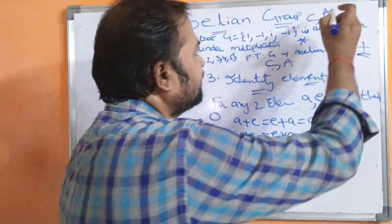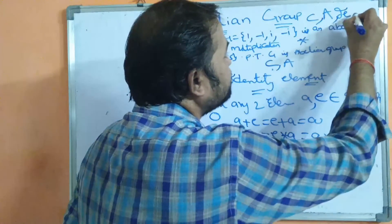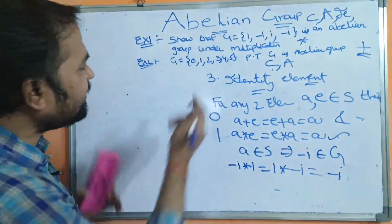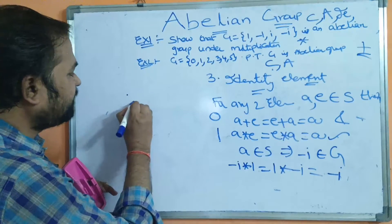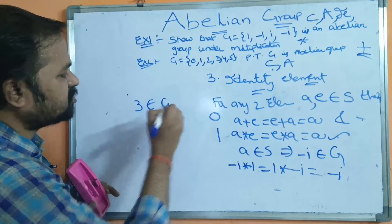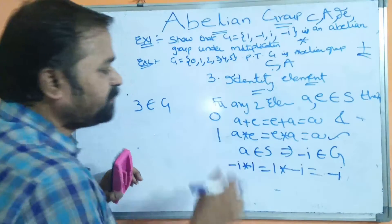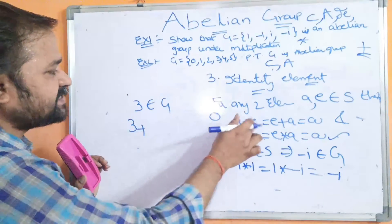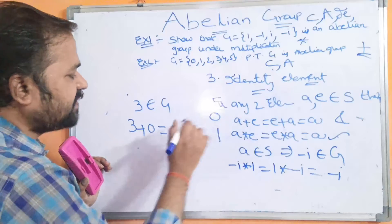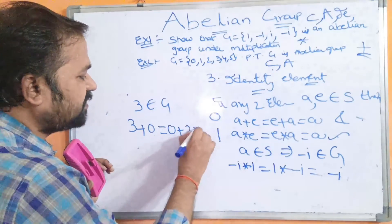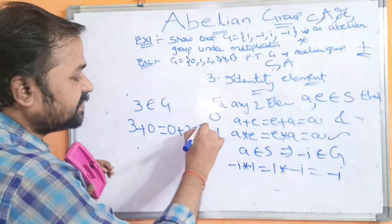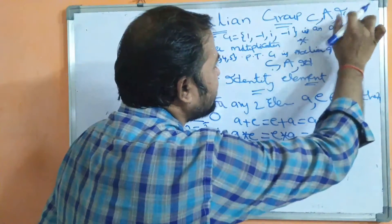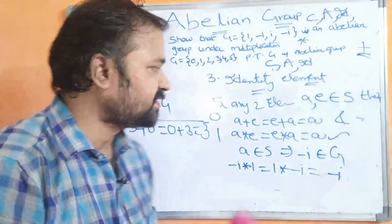For Example 2, let A = 3, so 3 belongs to G. We are doing the operation with respect to plus, and the identity element with respect to plus is 0. So: 3 + 0 = 0 + 3 = 3. The identity element is satisfied for the second problem also.